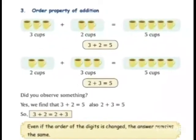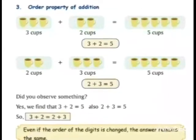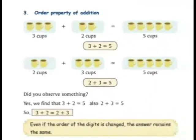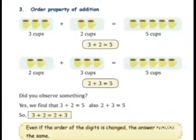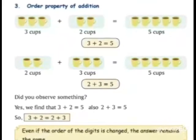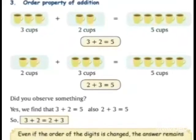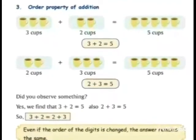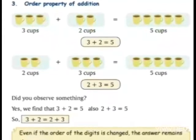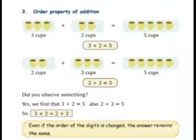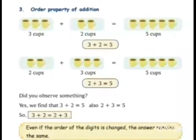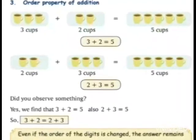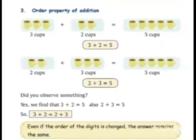In both cases, हमने दोनों में देखा — जब ऊपर हमने three plus two किया, तभी भी हमारा answer क्या आ गया? Five. Now did you observe something? अच्छा, क्या आपने कुछ देखा, कुछ इसमें समझा? We find that three plus two is equal to five, and also two plus three is equal to five.